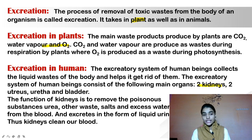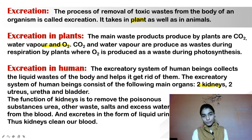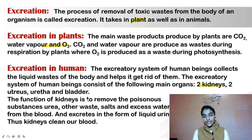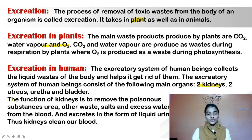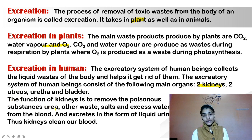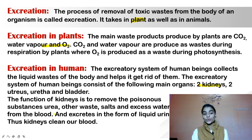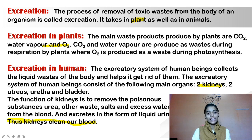The human excretory system consists of two kidneys, two ureters, a urethra, and a bladder. The main function of the kidneys is to collect waste products from the body and filter the blood. Kidneys remove poisonous substances like urea, excess salts, and excess water from the blood and excrete it in the form of liquid urine. Thus kidneys clean our blood.